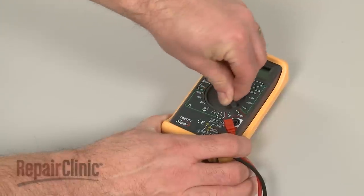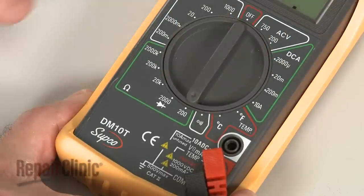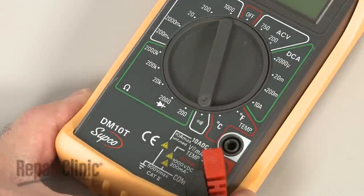When using a digital model, again rotate the dial to the lowest setting for ohms of resistance, or resistance with tone, if your meter has this option.